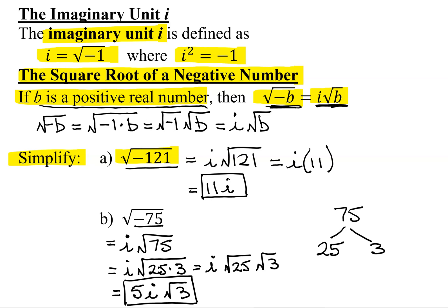In some textbooks, you might see the answer written as 5 times the square root of 3 times i, which is fine if it's typeset and you can definitely tell i is not underneath the square root sign. But in normal handwriting, it can be ambiguous whether i is underneath the square root or not. So it's always better to write it in the format 5i times the square root of 3.